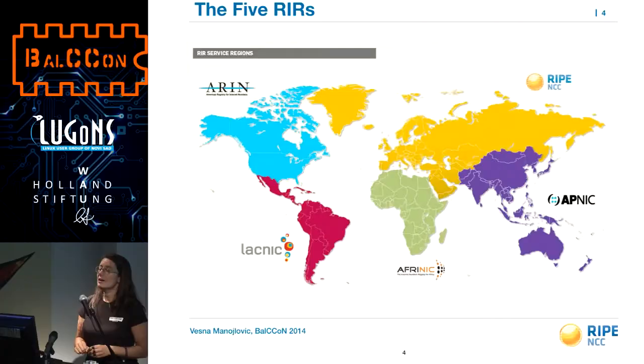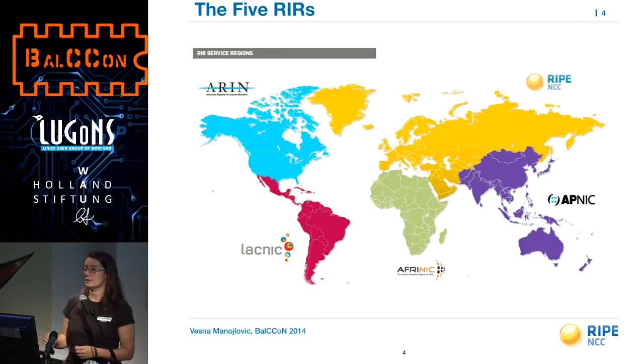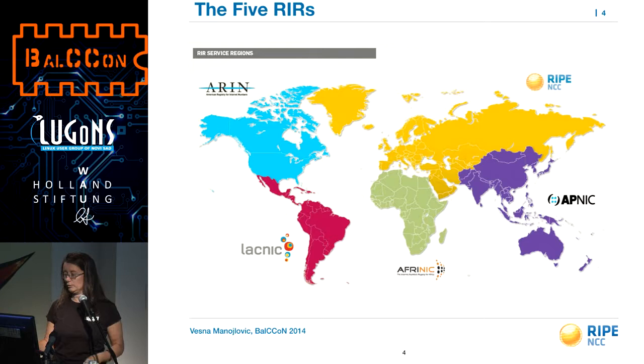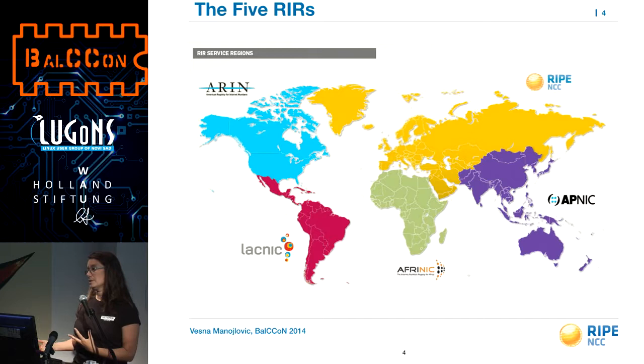Whenever you want to say you talked with somebody from RIPE NCC, you can't really talk with somebody from RIPE, because that's just anybody. RIPE NCC is one of the five Regional Internet Registries, or RIRs. What we do mostly is distribute IP addresses — IPv4, IPv6, AS numbers — and then we do a lot of other services.